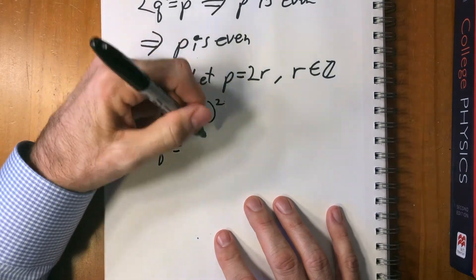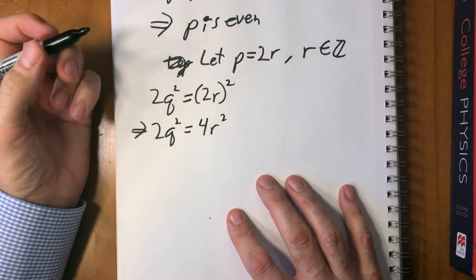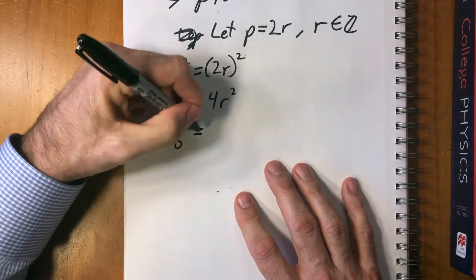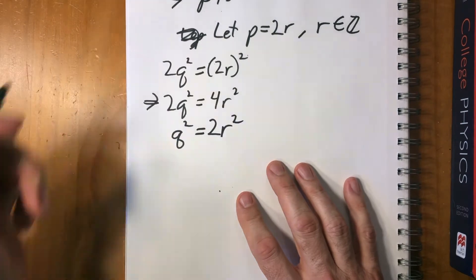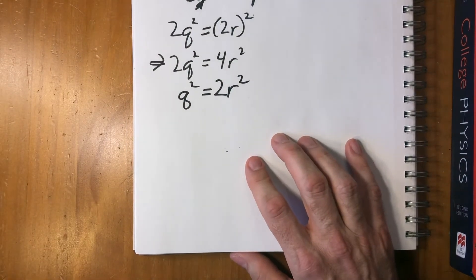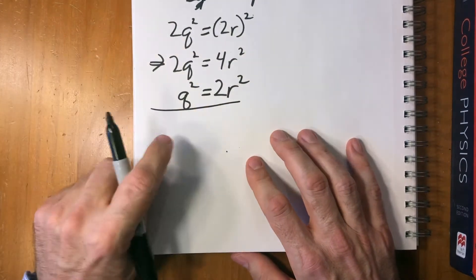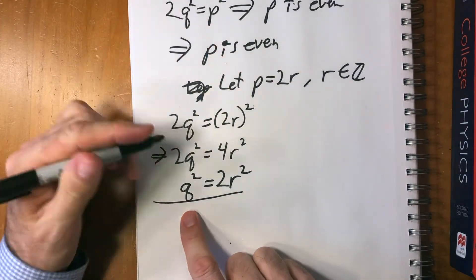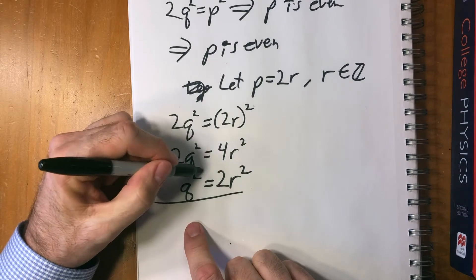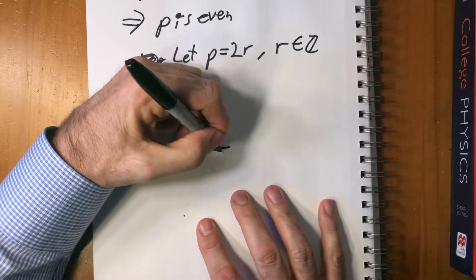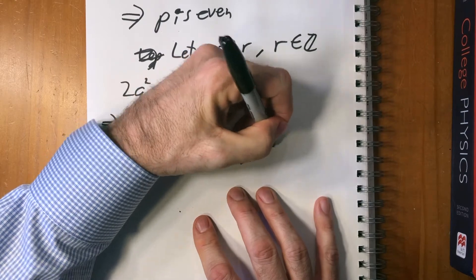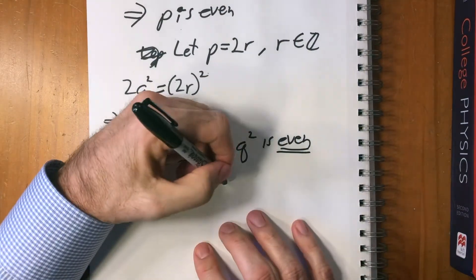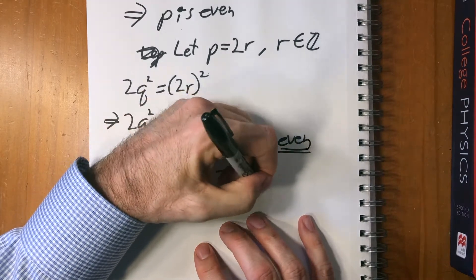2q² = 4r². Let's divide both sides by two and we have q² = 2r². You see where we're going? This is exactly the same as before. We just found out that q² is even. But if q² is even, then q is even.